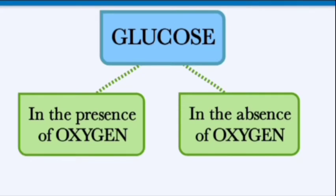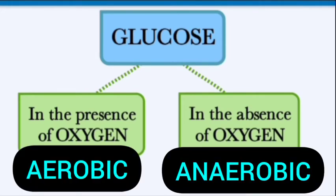In the previous topic we saw that we eat food to get energy, and the energy-giving component is glucose. Glucose is broken down to give energy. This breakdown of glucose occurs in two ways: one in the presence of oxygen and one in the absence of oxygen. Oxygen helps break down the food we have eaten and produce energy required for day-to-day life.